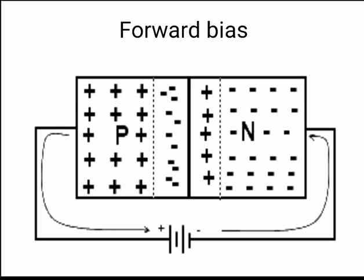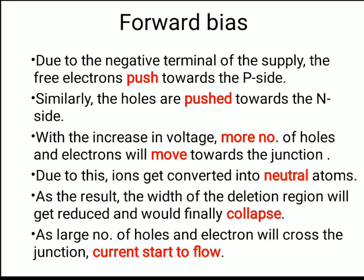Eventually the wall collapses and electrons start to flow across the junction. When electrons flow, current flows. So in forward bias, once the potential barrier collapses, current flows through the junction.